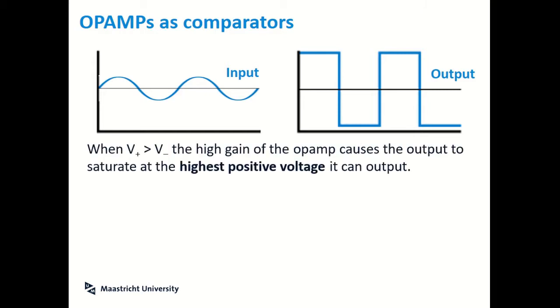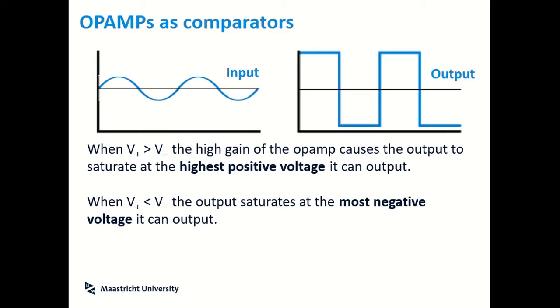If V plus, so if the non-inverting signal is greater than V minus, the inverting signal, then you would get the highest possible voltage. When V plus is smaller than V minus, then you would get the most negative voltage. So in our case, in the practical, you would get either plus 15 or minus 15 volts.